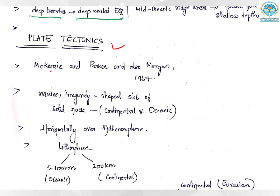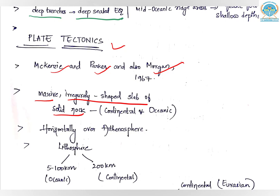Who gave this theory? Mackenzie, Parker, and also Morgan in 1967. How can you define a plate? It is a massive, irregularly shaped slab of solid rock. So the plate on Earth's surface — on the lithosphere — consists of a massive and irregularly shaped slab consisting of huge rock.